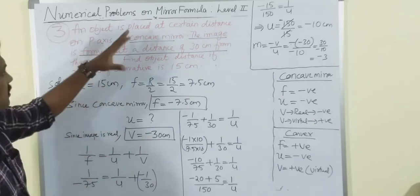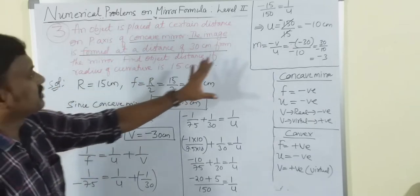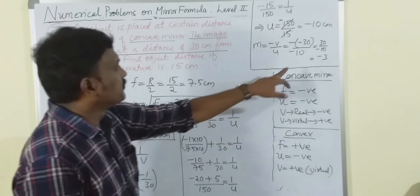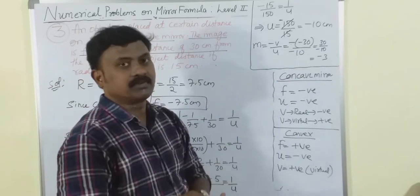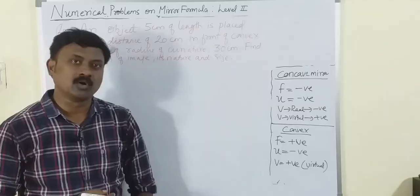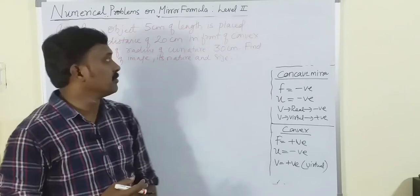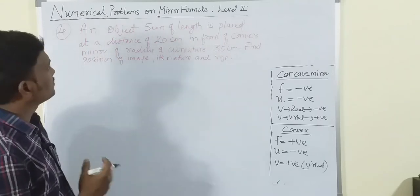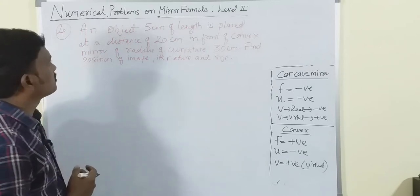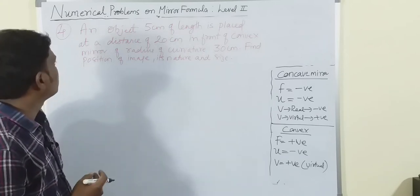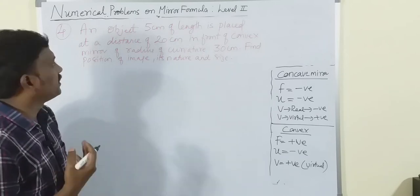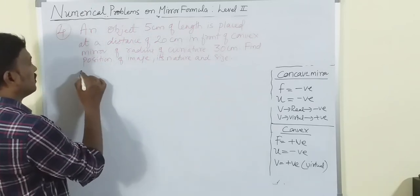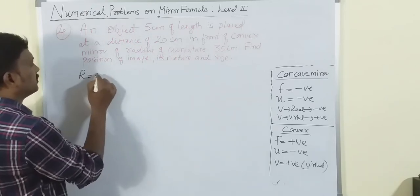The answer is absolutely right. Now let us go to the next problem: an object 5 centimeters in length is placed at a distance of 20 centimeters in front of a convex mirror of radius of curvature 30 centimeters.